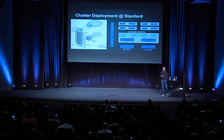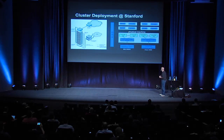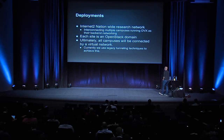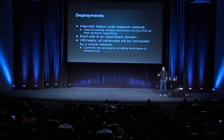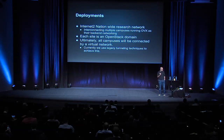We currently have a couple of deployments. The first is a cluster deployment at Stanford, which will ultimately be the first deployment for OpenCloud — a project led by Larry Peterson at Princeton that pushes the idea that everything is a service. OVX controls all the OpenFlow devices and allows spawning virtual networks for all the different services. Our planned deployment is an Internet2 nationwide deployment, interconnecting multiple campuses running OVX as their networking, where each campus is an OpenStack domain. Ultimately all these campuses will be connected over the Internet2 backbone via virtual networks spawned by OVX.